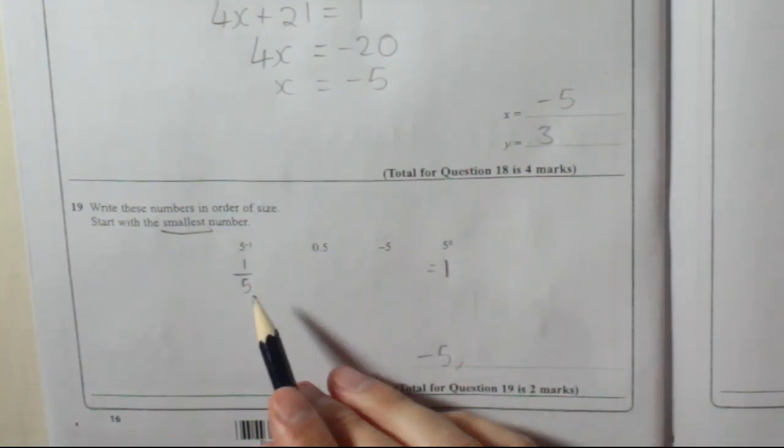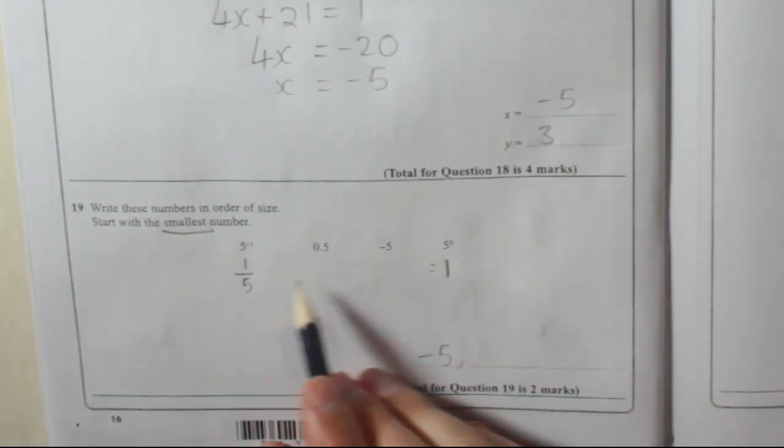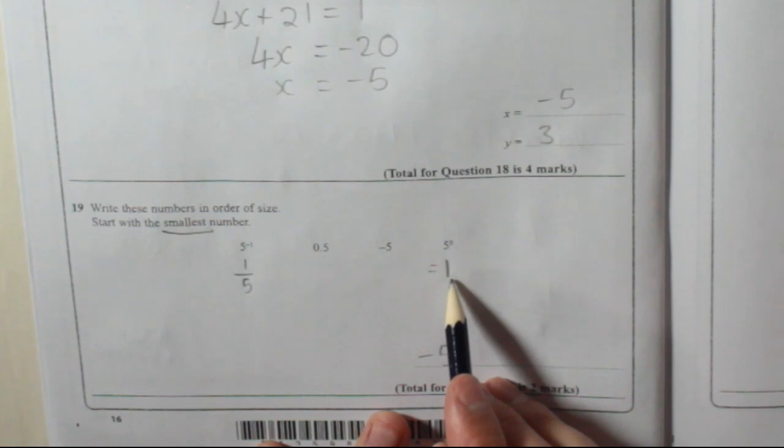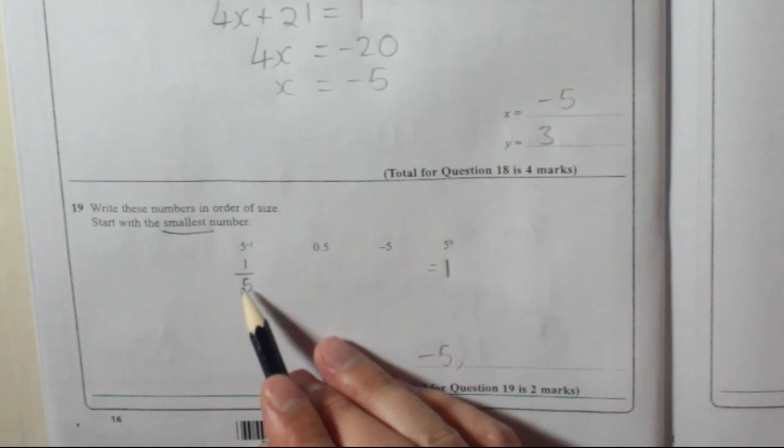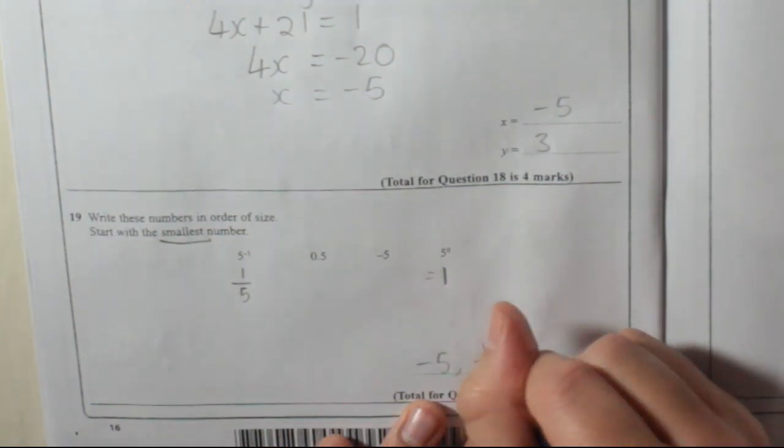Then you've got to choose between a fifth, 0.5 or 1. Well, they're fractions, and they're positive, and that's positive, so these are smaller. The fifth is smaller than a half, so a fifth.